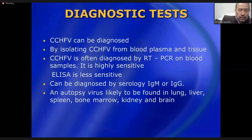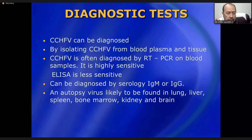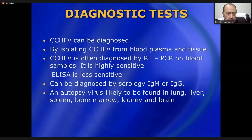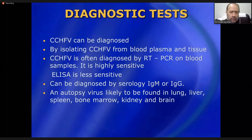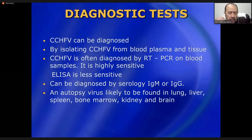Diagnosis is similar to dengue: PCR is the preferred method due to its high sensitivity, while the antibody technique is less sensitive. The virus can be isolated from plasma and tissues. IgM or IgG antibody detection is also possible. At autopsy, the virus can be found in the lung, liver, spleen, bone marrow, kidney, and brain.